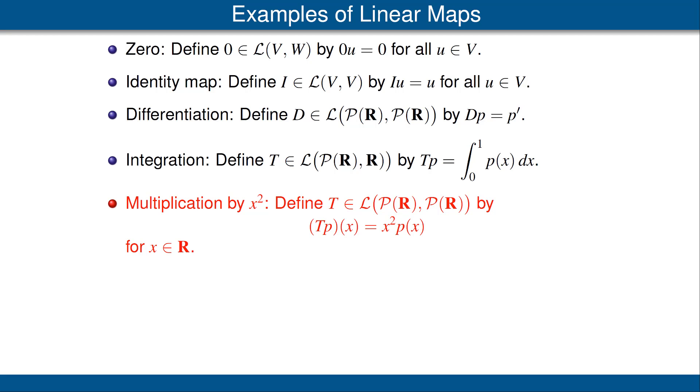Our next example is a linear map from the vector space of polynomials with real coefficients to itself. We'll call this linear map T. Thus we want T(p) to be another polynomial. T(p) evaluated at x will be x^2 times p(x).